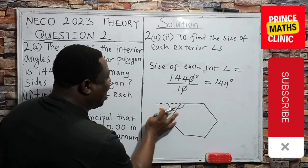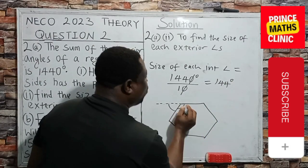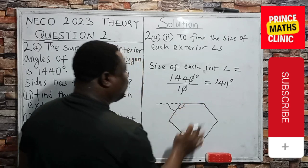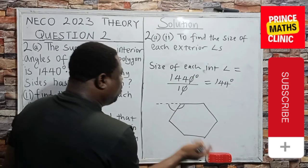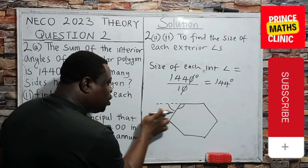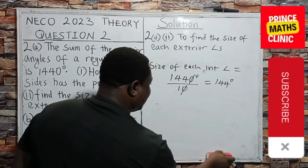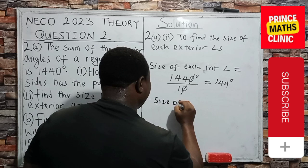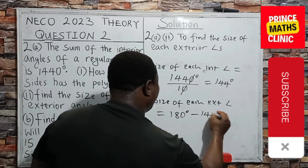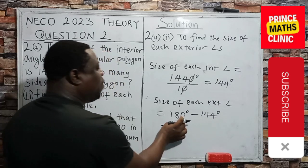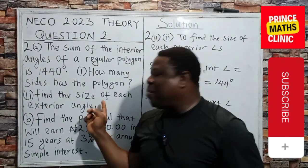And interestingly, when you have a polygon like this, for instance, this is an interior angle, then this is an exterior angle. Remember, this angle here and this angle here are adjacent angles on the same straight line. Since they are adjacent angles on the same straight line, and you have been given that each interior angle is 144 degrees, it means that since these two are on the same straight line, they must add up to give me 180 degrees. Therefore, size of each exterior angle is 180 degrees minus 144 degrees. And if you subtract 144 from 180, you are still going to obtain 36 degrees.